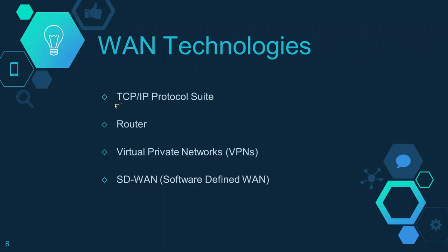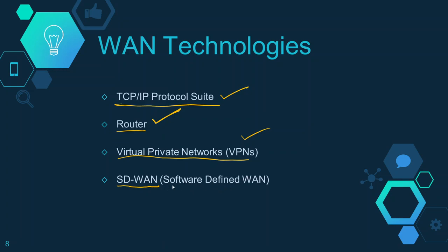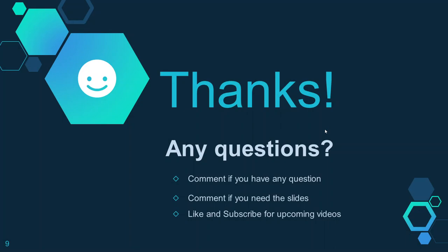Some technologies used inside WAN: the foremost is the TCP/IP protocol — every device including PCs, routers, and switches uses this protocol. The WAN uses routers to route traffic, unlike LAN which uses switches and hubs. VPNs are used to secure WAN traffic. Software-Defined WAN (SD-WAN) is a new emerging technology used to optimize WAN traffic with more security and new features, used in combination with SDN (Software Defined Networking) — we will cover SD-WAN and SDN in a separate video.